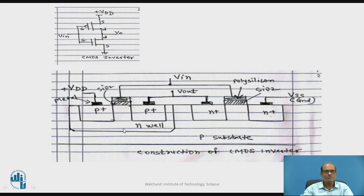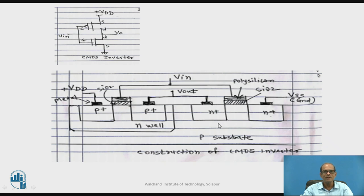The construction of this CMOS Inverter is shown in the diagram below. We start with a P-substrate. Onto this P-substrate, two heavily doped N+ regions are obtained by diffusion — one is the drain and the other is the source. In between is an insulating layer of SiO2, polysilicon, and the gate. This is the N-channel E-MOSFET fabricated.